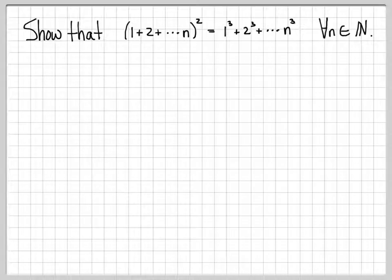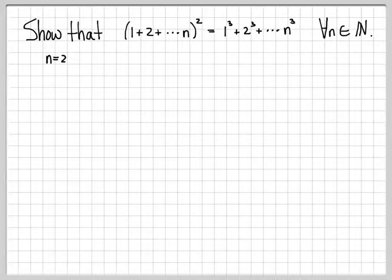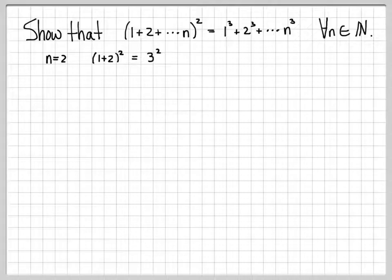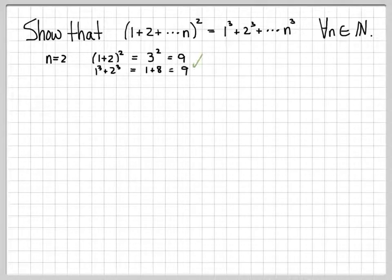That's what we want to establish for all natural numbers n. First, I like to plug in a few values just to see that this makes sense and get a feel for things — this isn't a proof, it just gives us a little insight. For example, when n is 2, the left side says 1 plus 2 quantity squared, which equals 3 squared, which equals 9. The right side says 1 cubed plus 2 cubed, which equals 1 plus 8, which equals 9. So that checks out.